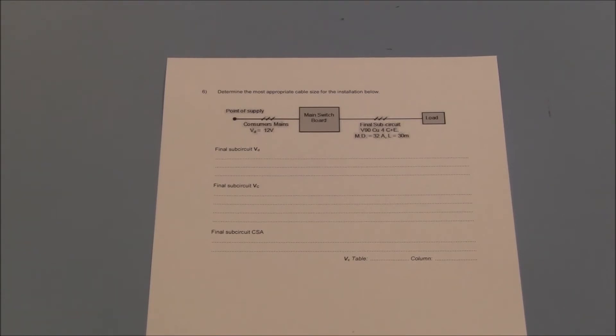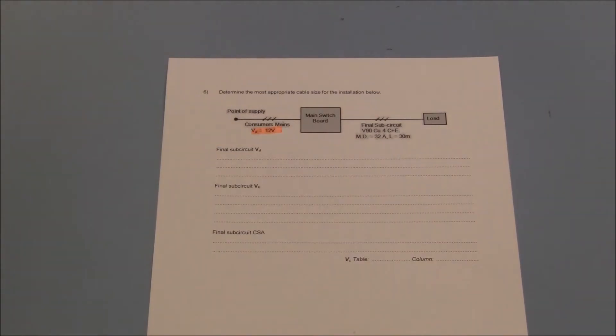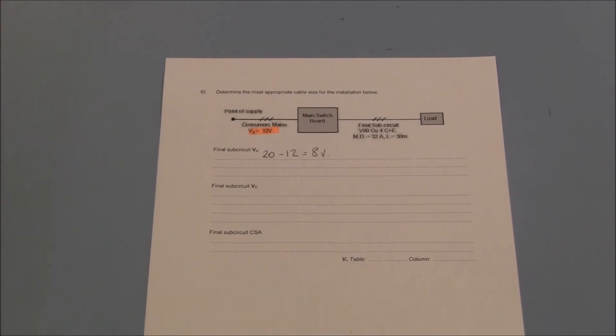This exercise is to select the appropriate cable size of a circuit when you are aware of the maximum permissible voltage drop. This three-phase installation has an established voltage drop of 12 volts across a consumer's mains. This means that the maximum permissible voltage drop across a final sub-circuit is 8 volts.